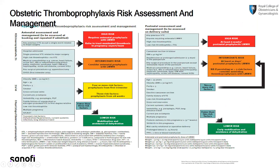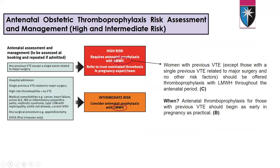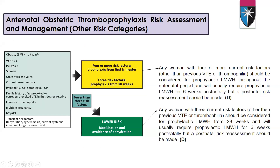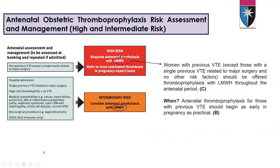For the high risk group: any previous VTE except a single event related to major surgery is high risk and requires antenatal prophylaxis. This requires antenatal prophylaxis with low molecular weight heparin, and we have to refer to the antenatal thromboprophylaxis team. Women with previous VTE — except those related to a single previous major surgery — should be offered thromboprophylaxis with low molecular weight heparin throughout the antenatal period.